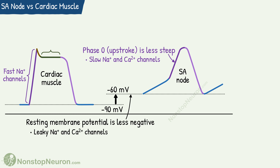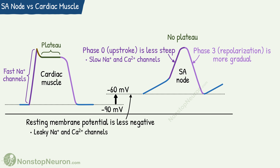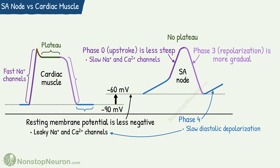Next, a characteristic feature of the action potential in the myocyte is a plateau. However, this is not seen in the action potential in the SA node. Next, phase 3 or repolarization is more gradual in the SA node as compared to that in the myocyte. And finally, phase 4 — it's constant in the myocytes, whereas in the SA node, phase 4 shows slow diastolic depolarization. In fact, this is the thing that makes the SA node self-excitable. So, these were all the differences.